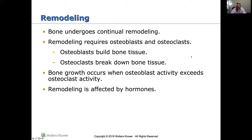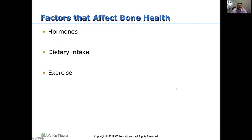Bone undergoes continual remodeling — a certain degree of breakdown and rebuilding is going on all the time. It requires osteoblasts and osteoclasts. Osteoblasts build bone tissue — a way to remember that is 'blast' and 'build' both start with B. Osteoclasts break down bone tissue. When osteoblast activity exceeds osteoclast activity, you have bone growth. This remodeling is affected by hormones in the body. Factors that affect bone health include hormones, dietary intake, exercise, and to a certain degree, sex and age.